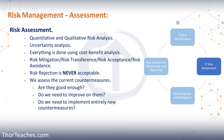As the next option, we have risk acceptance. We accept the risk is there — we know it, we have done our due diligence and due care. We know that this risk is going to cost us $250,000 a year, but the countermeasure to mitigate the risk is going to cost us $1 million. In this case, we'll probably just live with it. That would be risk acceptance.